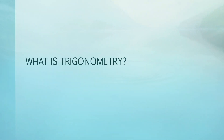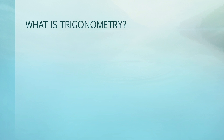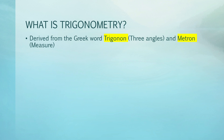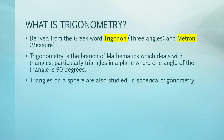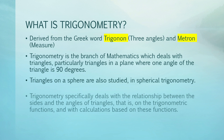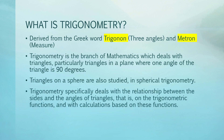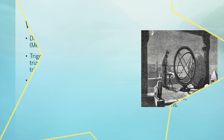First, we're going to define what trigonometry is. Trigonometry is derived from the Greek word 'trigonon,' which means triangles, and 'metron,' which means measure. Trigonometry is the branch of mathematics which deals with triangles, particularly triangles in a plane where one angle of the triangle is 90 degrees. Therefore, trigonometry specifically deals with the relationship between the sides and the angles of triangles, that is the trigonometric functions and calculations based on these functions.